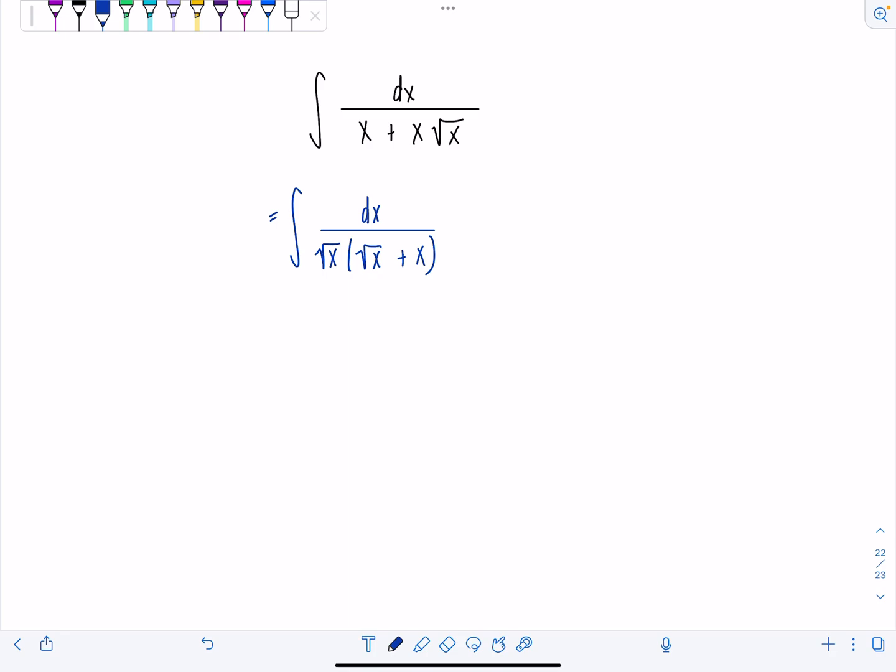So if I factor out radical x from x, then I'm left with a radical x. And then taking out radical x from the second term in the denominator leaves me with just an x.